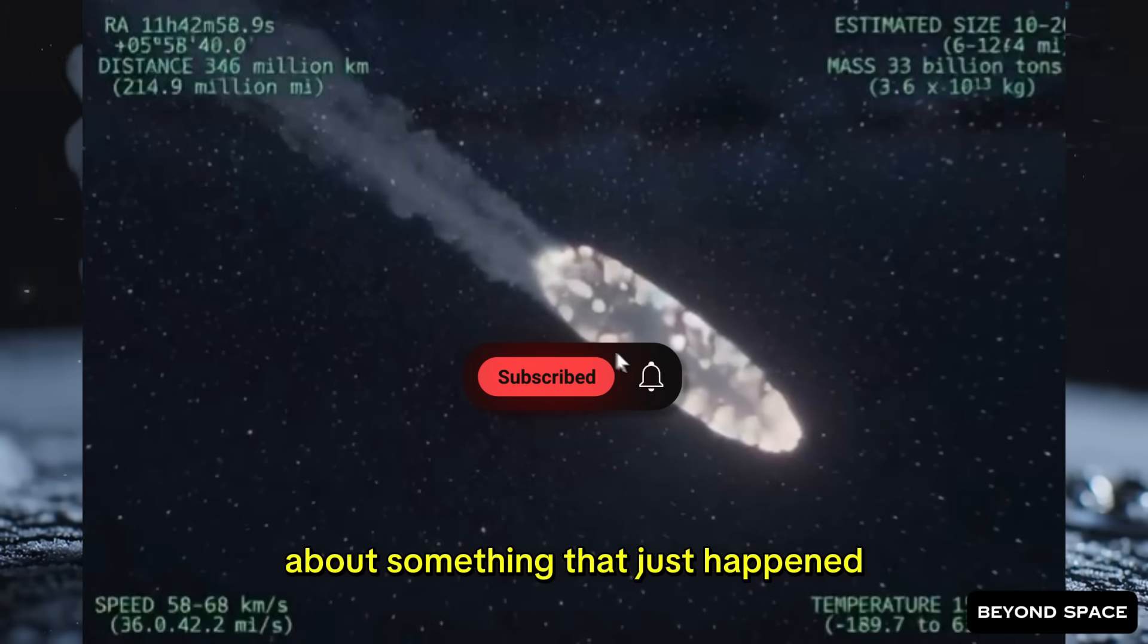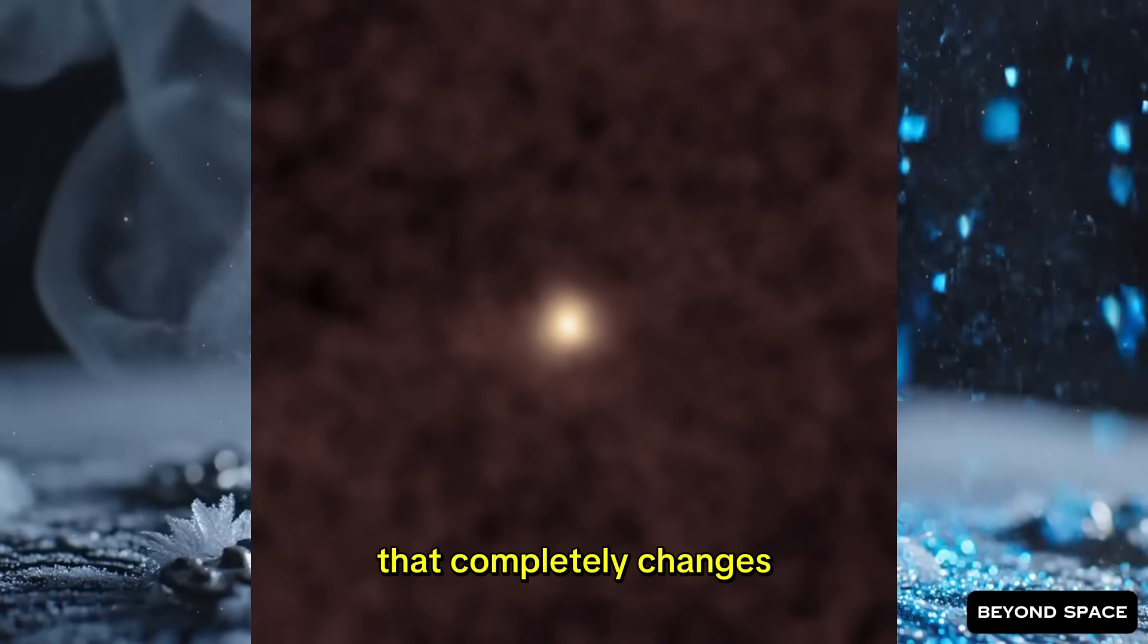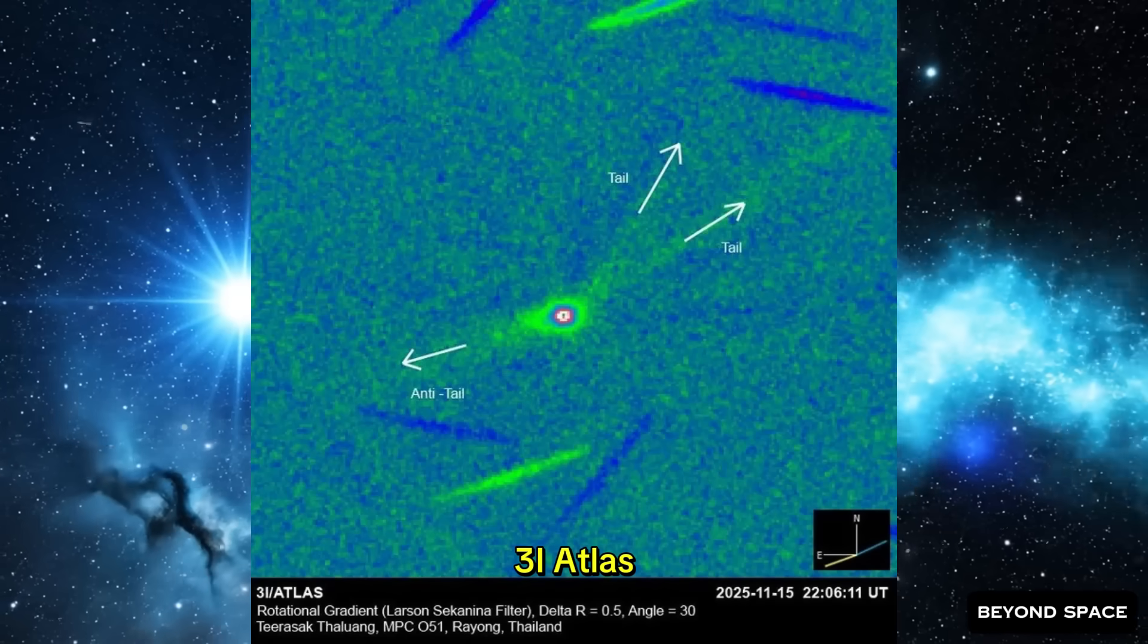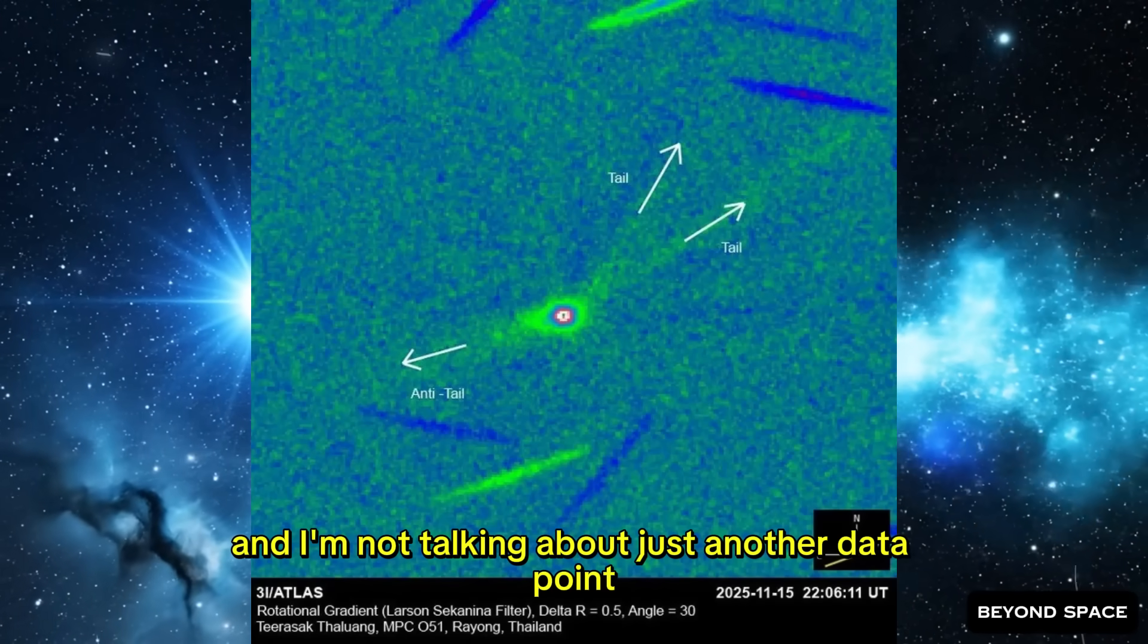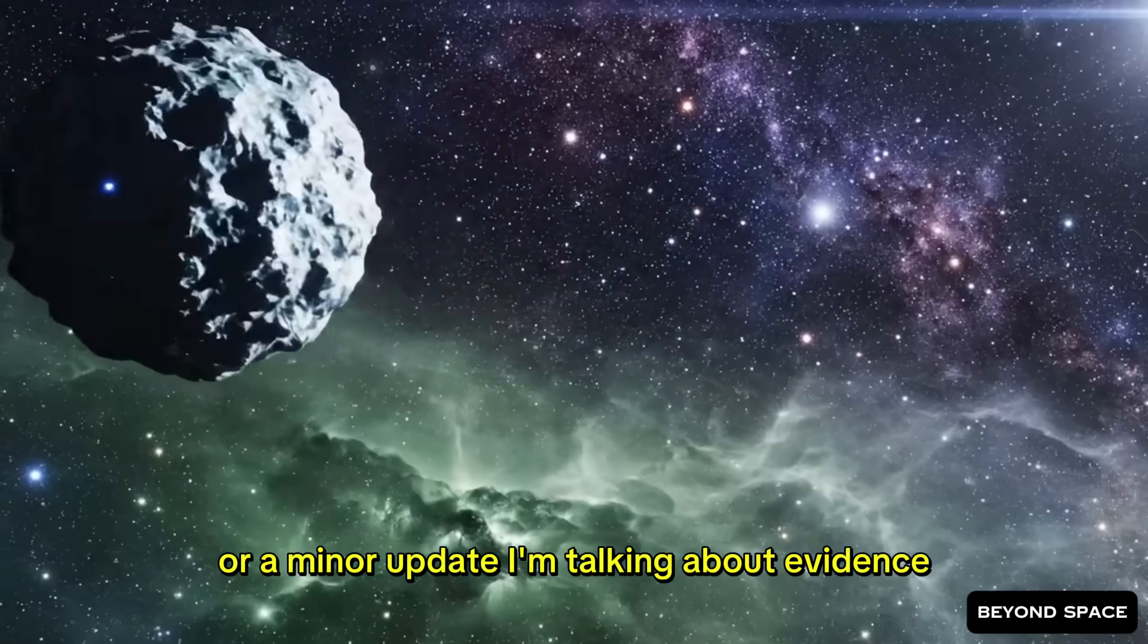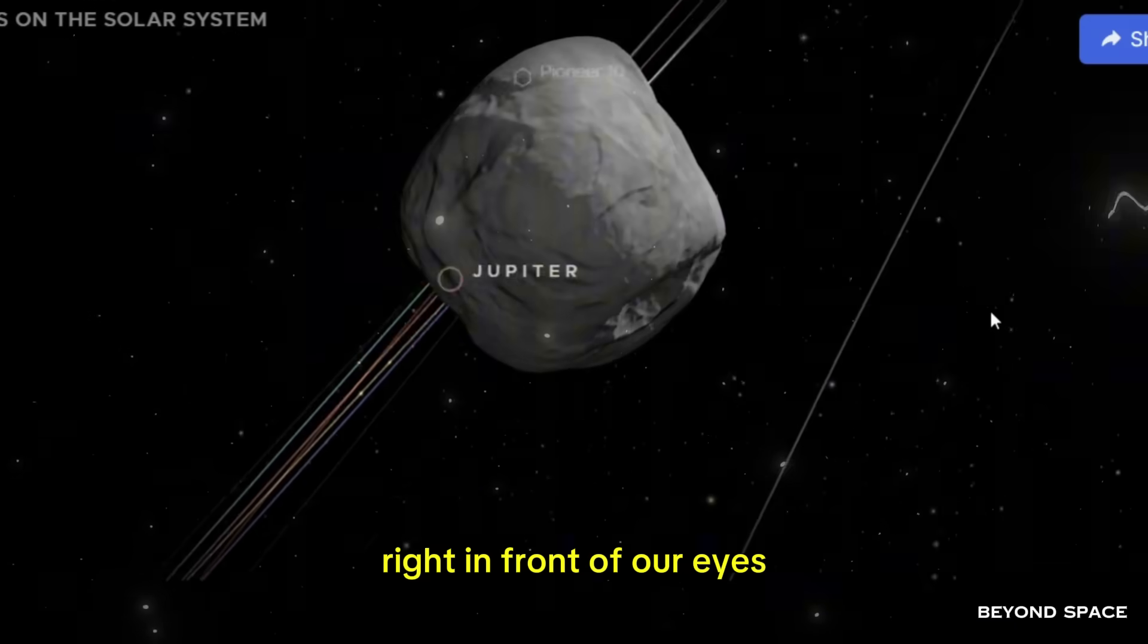I need to be honest with you about something that just happened, and it's big. NASA discovered something today that completely changes what we thought we knew about this interstellar comet, 3i Atlas. I'm talking about evidence that this thing might actually be transforming right in front of our eyes.